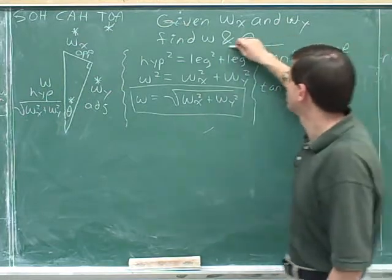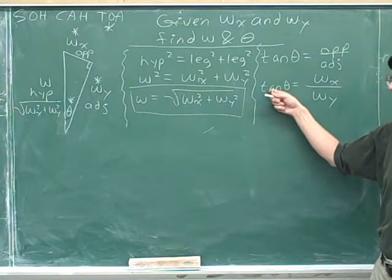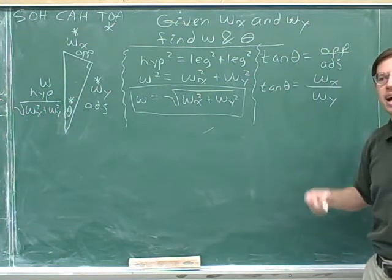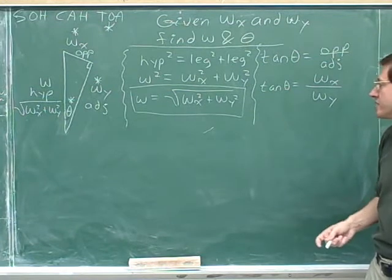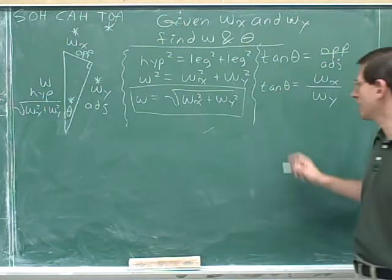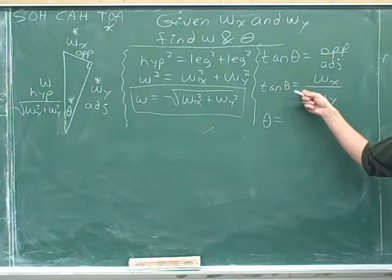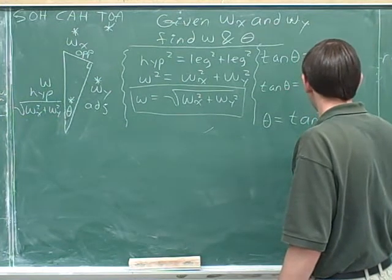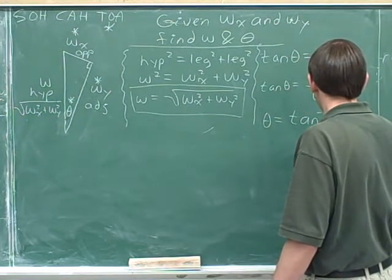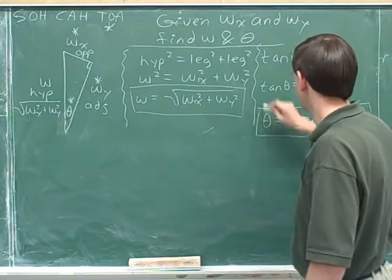Now we have to solve for theta. We're trying to find theta. We have to get rid of this tangent function then, on the left-hand side, by doing the opposite. The opposite of a tangent is an inverse tangent. If we take the inverse tangent of the left-hand side, all that's left is theta. But then we have to take the inverse tangent of the right-hand side. And that's our answer.